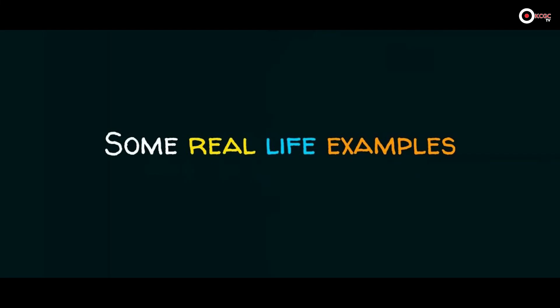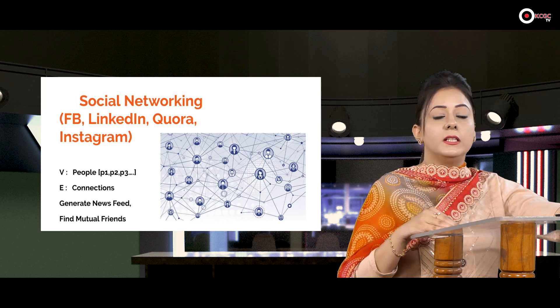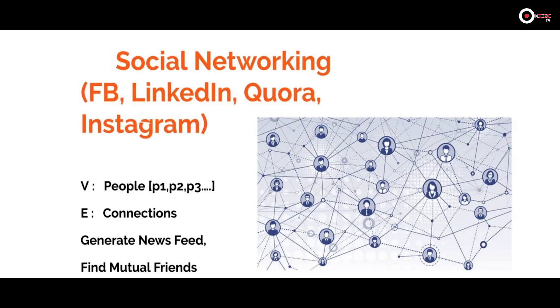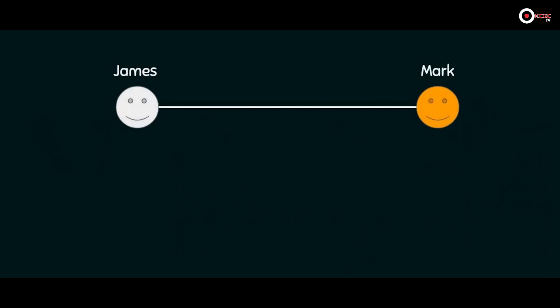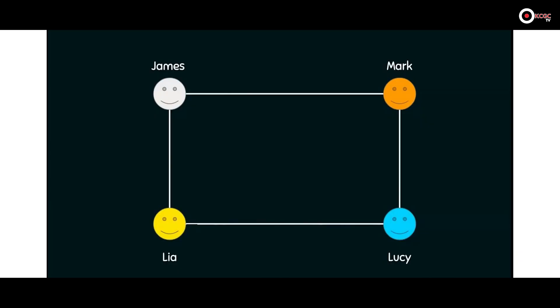Now we have discussed all four linear data structures. It's time to discuss non-linear data structures: trees and graphs. Storing friendship information in social networking sites is a real-life example. Whichever social media we use — LinkedIn, Instagram, Quora, or Facebook — all the information is stored in the form of a graph. For example, James is a friend of Mark: the nodes of the graph contain information about James and Mark, and the edge shows the relationship between them. James is also a friend of Leah, so there is an edge between James and Leah. Lucy is a friend of Mark and Leah but not James. This whole friendship information is stored in the form of graphs.